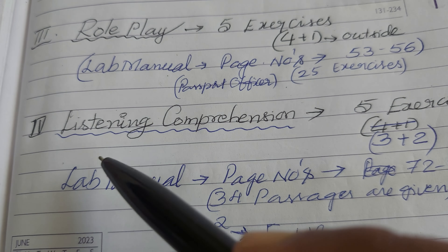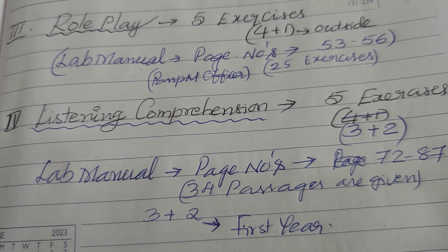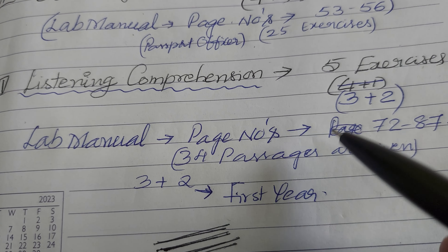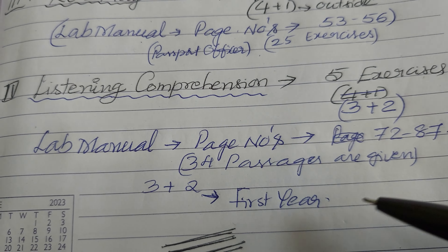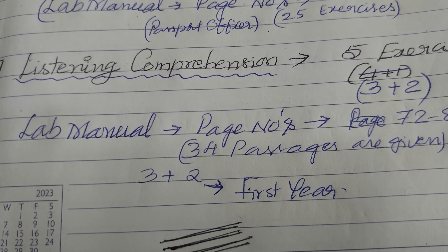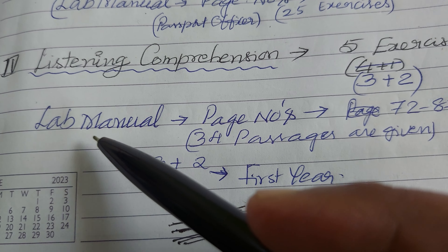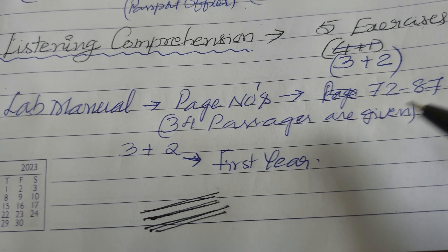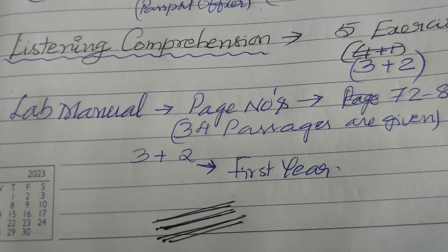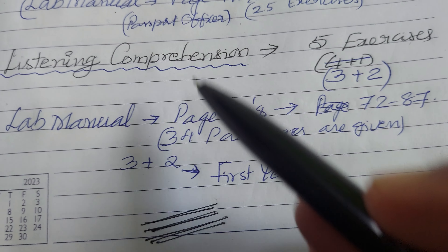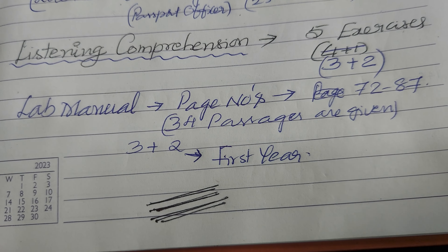The last element is listening comprehension — five exercises, but structured three plus two, not four plus one. Three come from your handbook, two from outside. From the lab manual, refer to page numbers 72 to 87 — 34 passages are given. Take any three: copy the passage, questions, and answers from your lab manual.